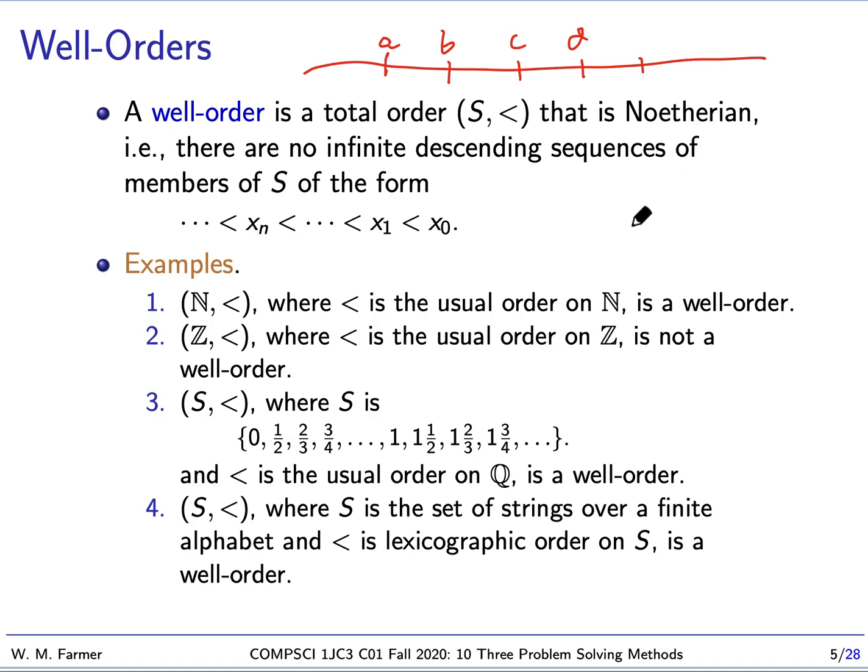Noetherian means that there are no infinite descending sequences. I can start with a sequence, pick a smaller value, and keep picking smaller values, and that cannot be infinite if it's Noetherian. We know the natural numbers is a well-order because if we start with any natural number and pick a smaller natural number, eventually we run out of natural numbers. In a finite number of steps, we run out of natural numbers. So the natural numbers with less than is a well-order.